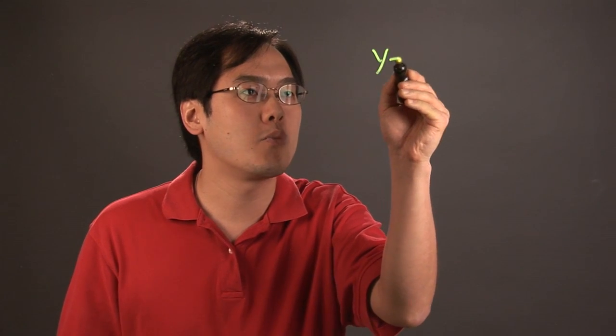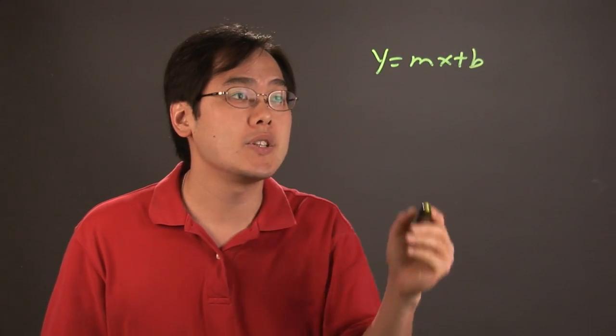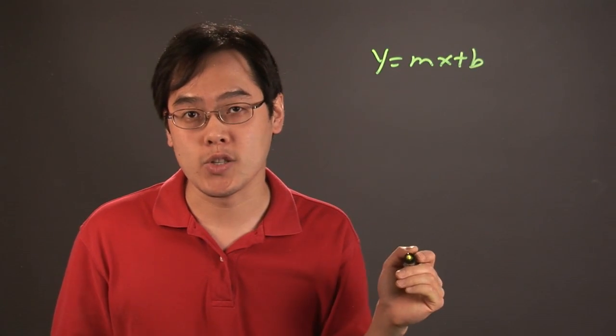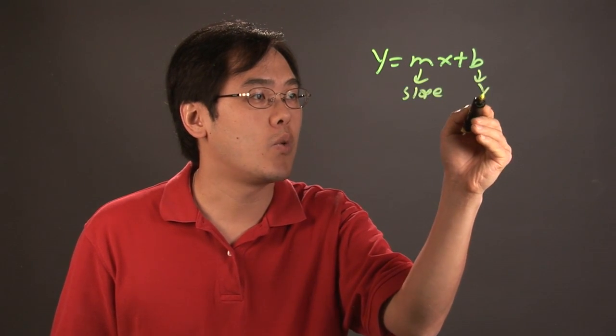As you know, with slope-intercept form, it's of the form y equals mx plus b. A couple things to consider is that x and y are your standard x and y coordinates. Your m is your slope, and your b is your y-intercept.